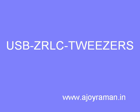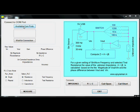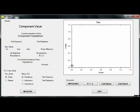This is a demonstration of my USB ZRLC tweezers, which you see in the picture. On the Windows GUI, the first thing to do is to establish connection to the COM port.